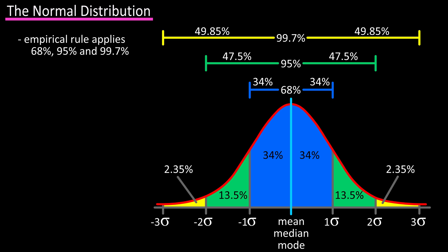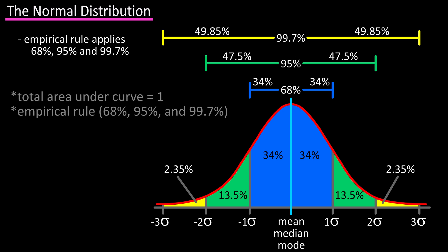The two biggest things to remember about the normal distribution curve are that the area under the curve is equal to one, and the empirical rule of 68 percent, 95 percent, and 99.7 percent in regards to the mean and standard deviation. Both of these concepts are extremely important.